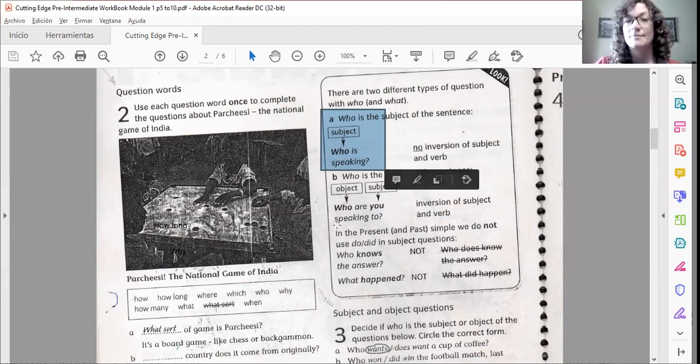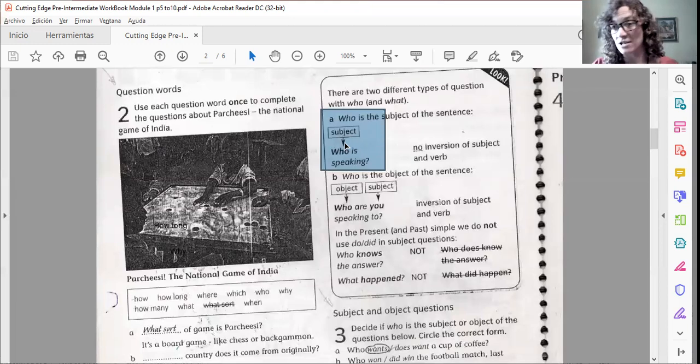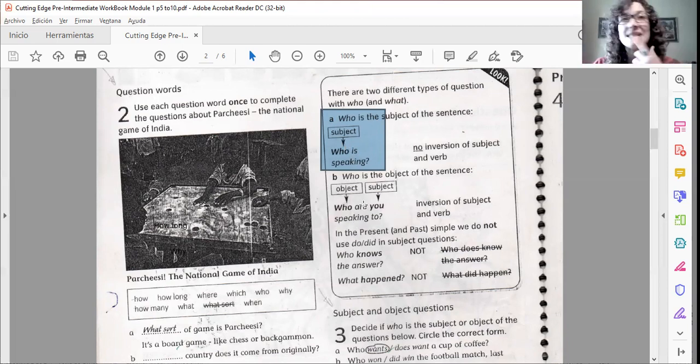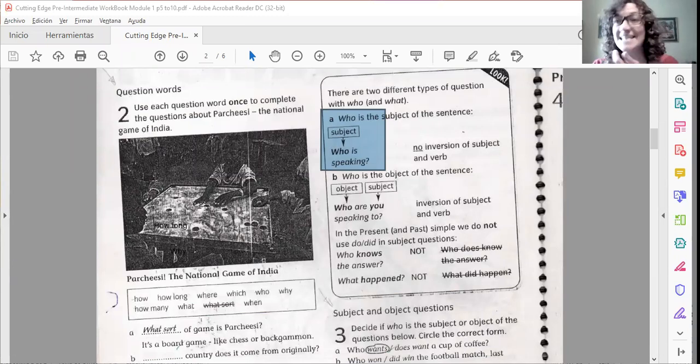For example, who is this pencil? The same happens with what, for example. What are you doing? Qué estás haciendo? What are you, not you are. What are you doing? But I can say, let me think, an example. For example, what is this? Qué es esto? What is the subject? I'm asking about the subject.